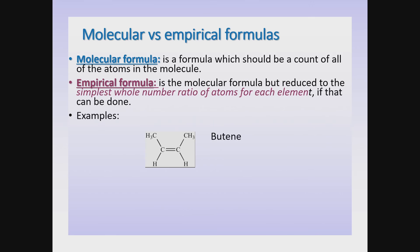Now I want to talk in a little more detail about the two different kinds of formulas you can see for a molecule. One kind is called a molecular formula, which is a count of all the atoms in the molecule. Another formula is called an empirical formula, which is the molecular formula reduced to the simplest whole number ratio of atoms for each element, if that can be done.